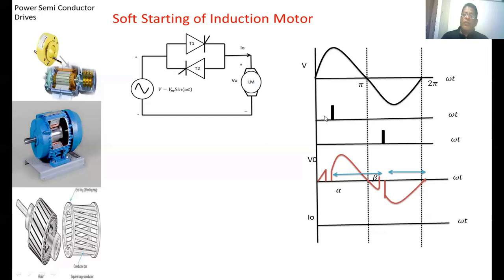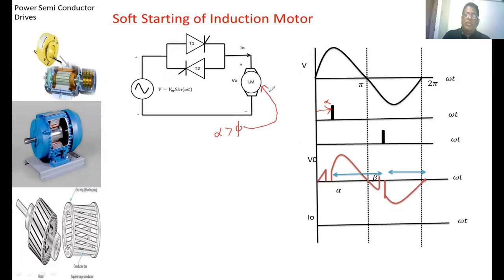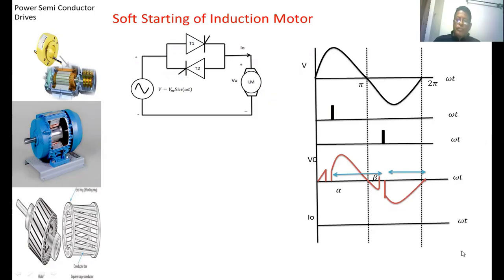This is possible only when the firing angle alpha is greater than the load angle of the induction motor. This load angle is highly dependent upon the resistance as well as the inductance of the induction motor. From alpha to pi the output current will increase. From pi to beta the output current will come to zero. The same pattern repeats in the next cycle.